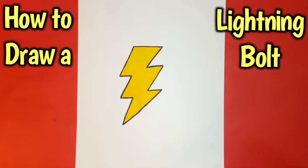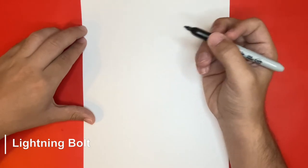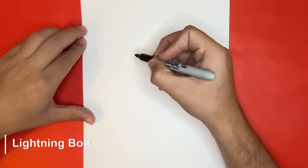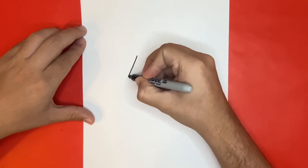How to draw a lightning bolt step by step. Hey what is going on everyone, so for the first step of today's drawing we're going to begin by drawing two lines that'll both be connected. They will look similar to an upside down V.